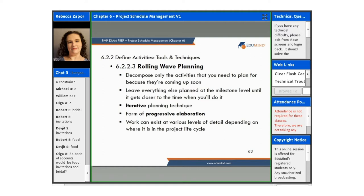Our next tool and technique is rolling wave planning, and this helps you to decompose only the activities that you need to plan for because they're coming up soon. This would be used a lot in an adaptive type of environment. It leaves everything else planned at the milestone level until it gets closer to the time when you'll do it, and then that's when you get into the more granular detail. It is an iterative planning technique and a form of progressive elaboration.